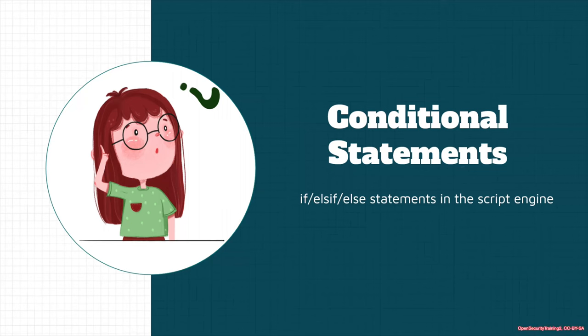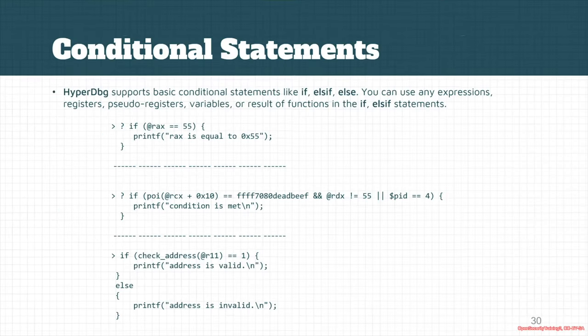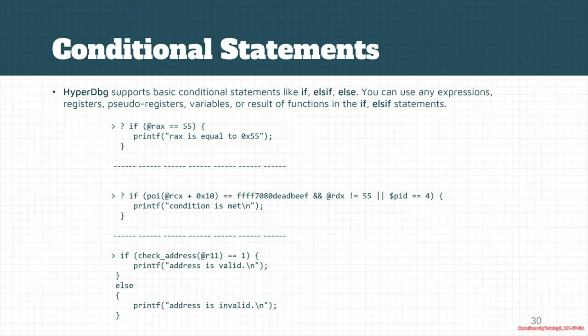Let's look at the conditional statements used in the script engine. It's pretty similar to C language — HyperDbg supports basic conditional statements like if, else if, and else. For example, if we want to check that the RX register is equal to 0x55 in hexadecimal format, then we print that RX is equal to 0x55. This is basically used for checking conditions.